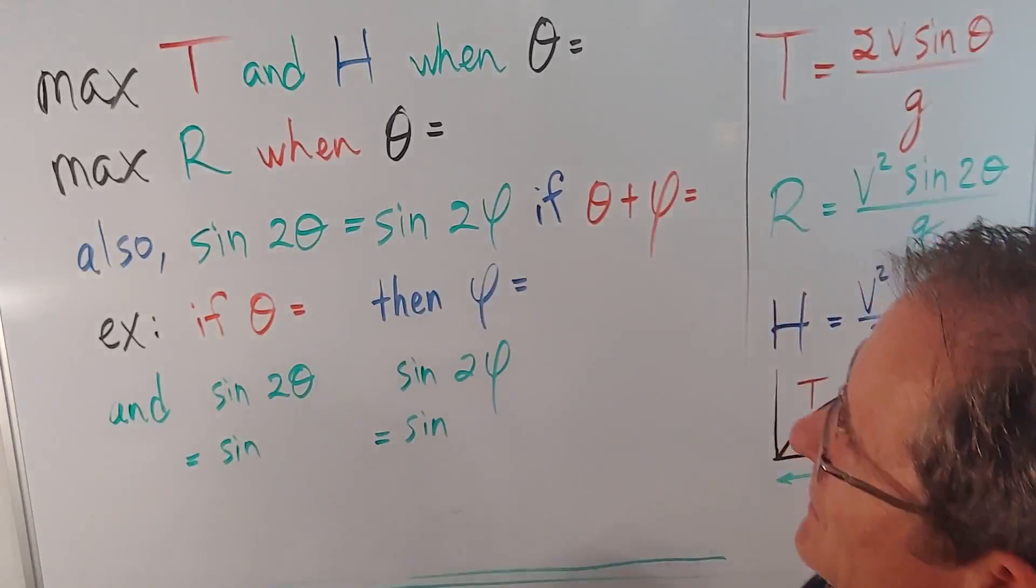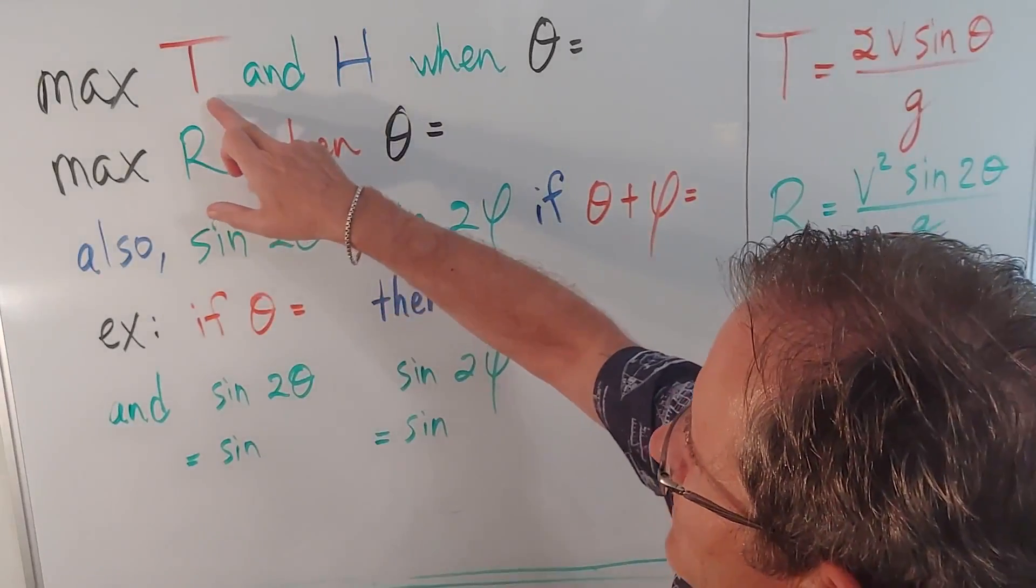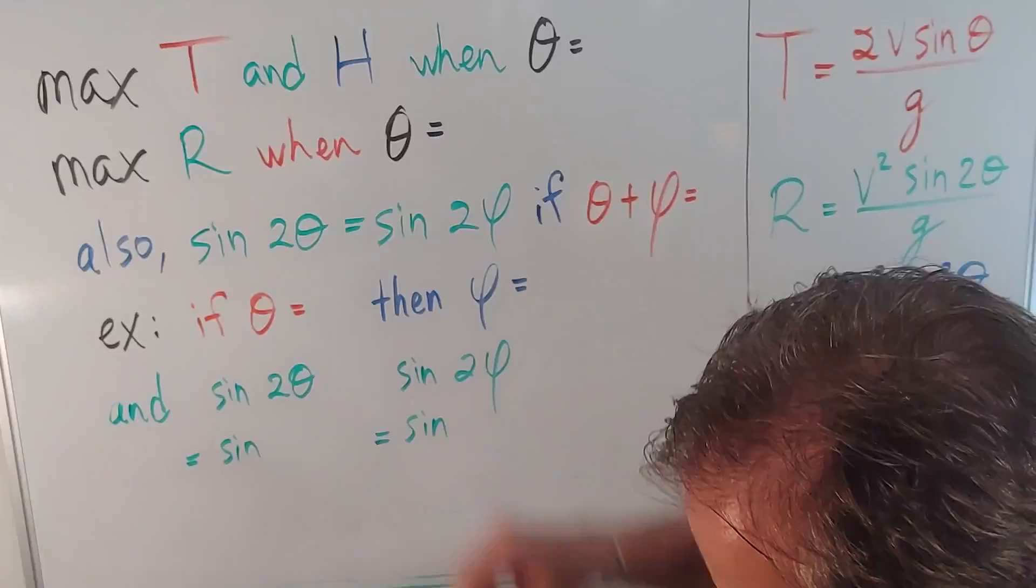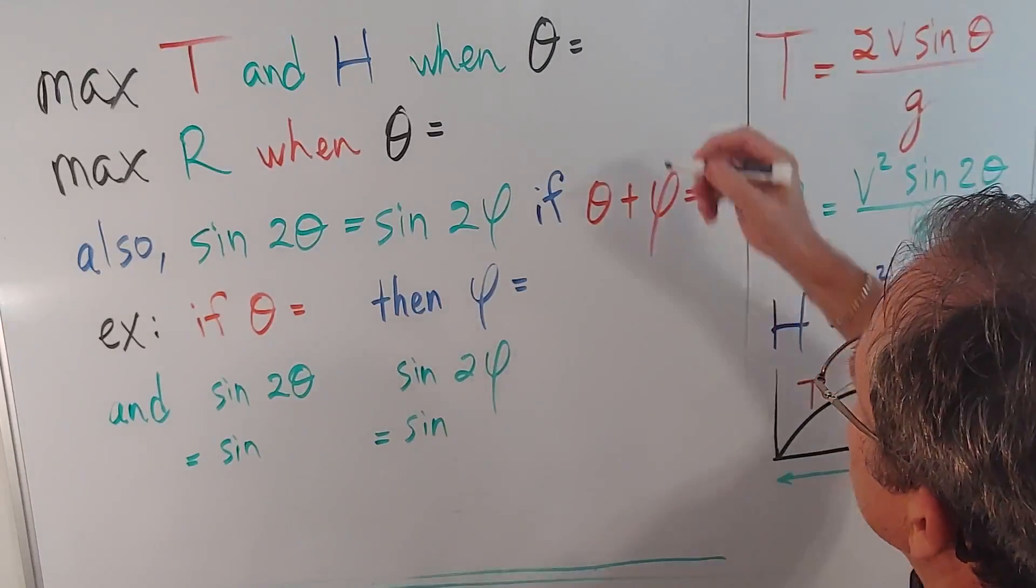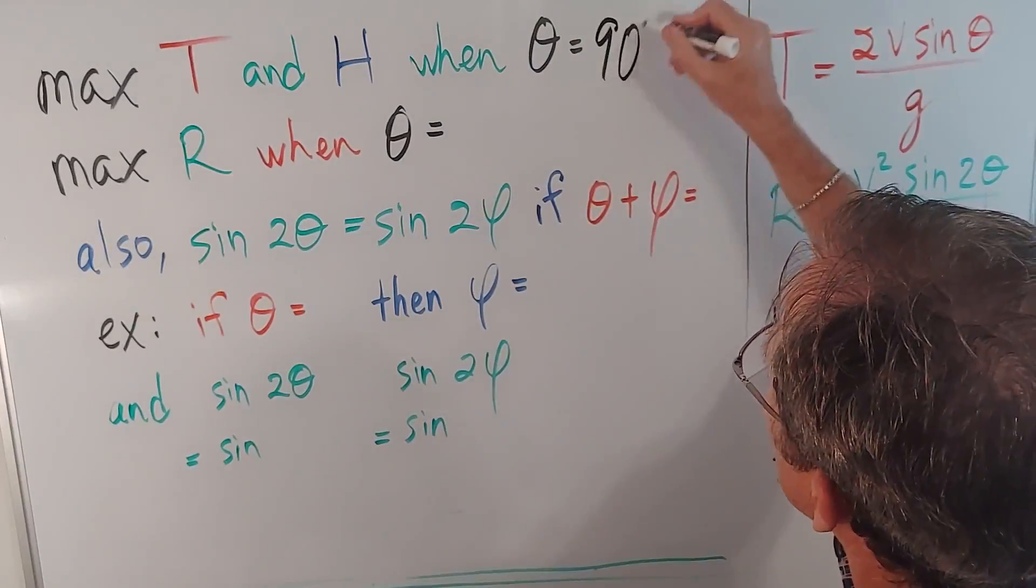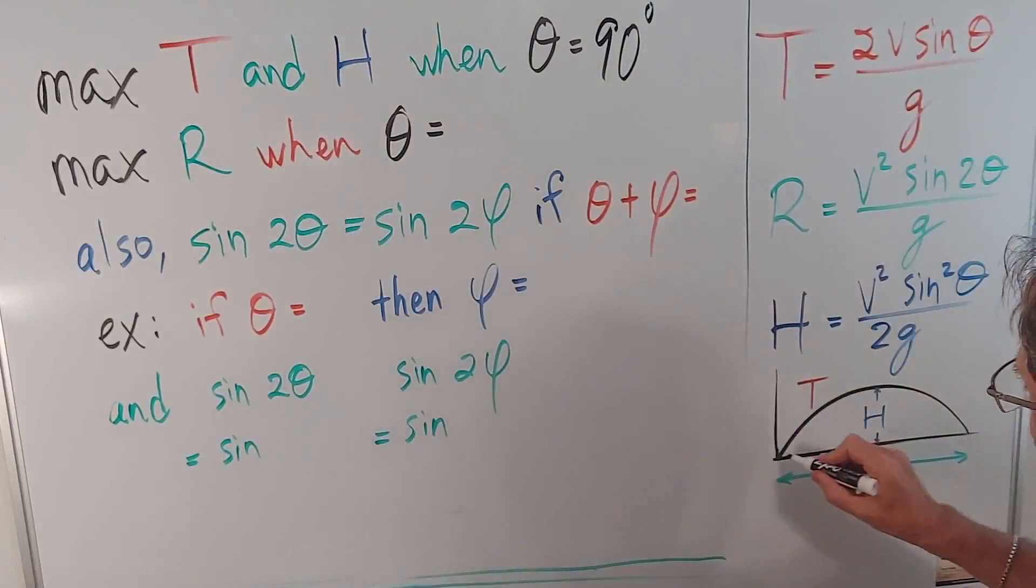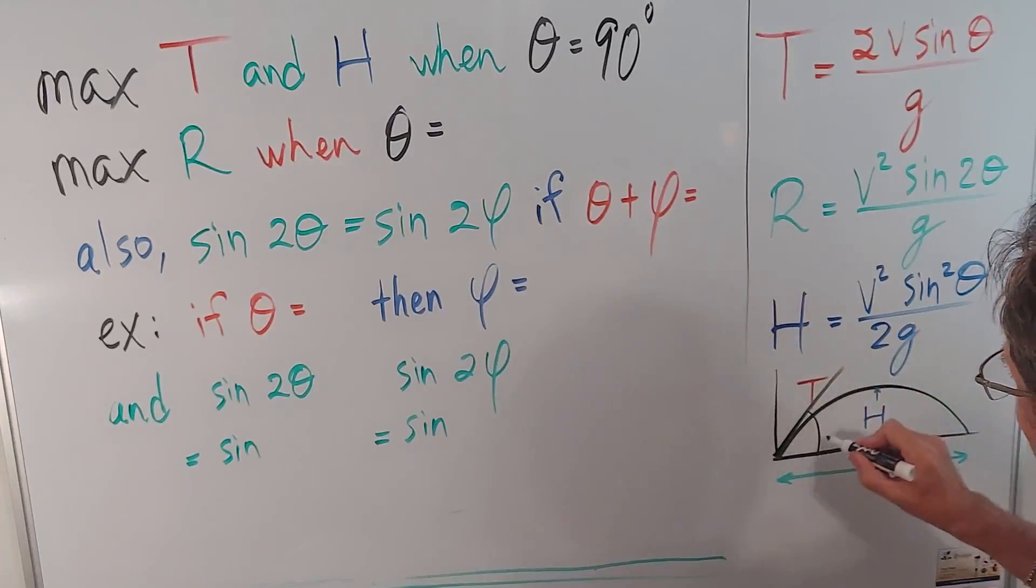Now, we talked about this before, but let's just summarize. The maximum time and the maximum height are when theta equals, that's right, 90 degrees. And you launch it straight up into the air because theta is the angle right here.